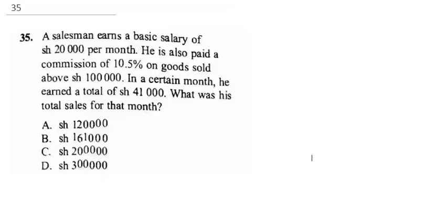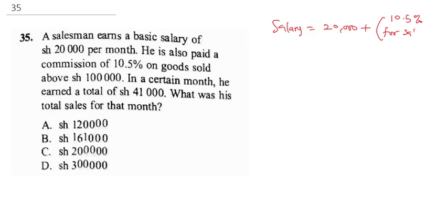The next question: a salesman earns a basic salary of 20,000 shillings per month. He is also paid a commission of 10.5% on goods sold above 100,000 shillings. In a certain month he earned a total of 41,000 shillings. What were his total sales for that month?